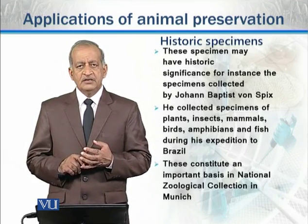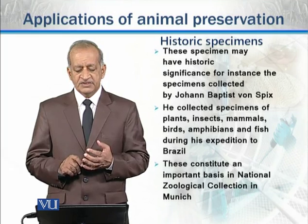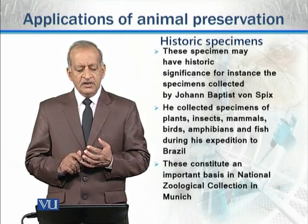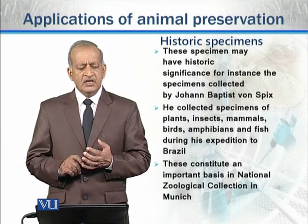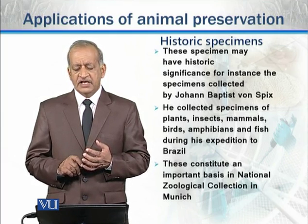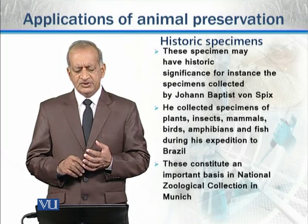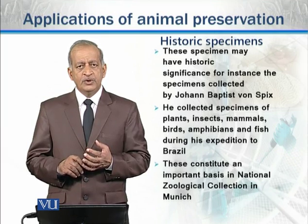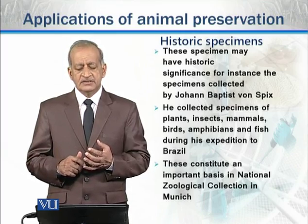Then, historic specimens. As the name indicates, these may have historic significance, that is why they are named historic specimens. For instance, specimens collected by Johann Baptist during his expedition to Brazil — including plants, animals, different mammals, birds, amphibians, and even fish — are present in the natural history collection in Munich. Since they are important in the history of that particular place and area, they are called historic specimens.